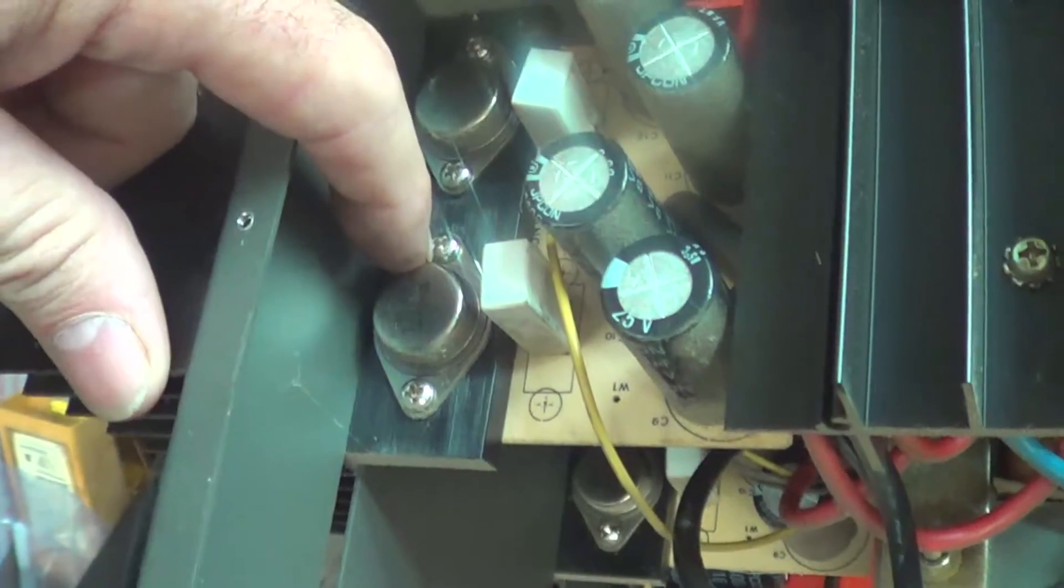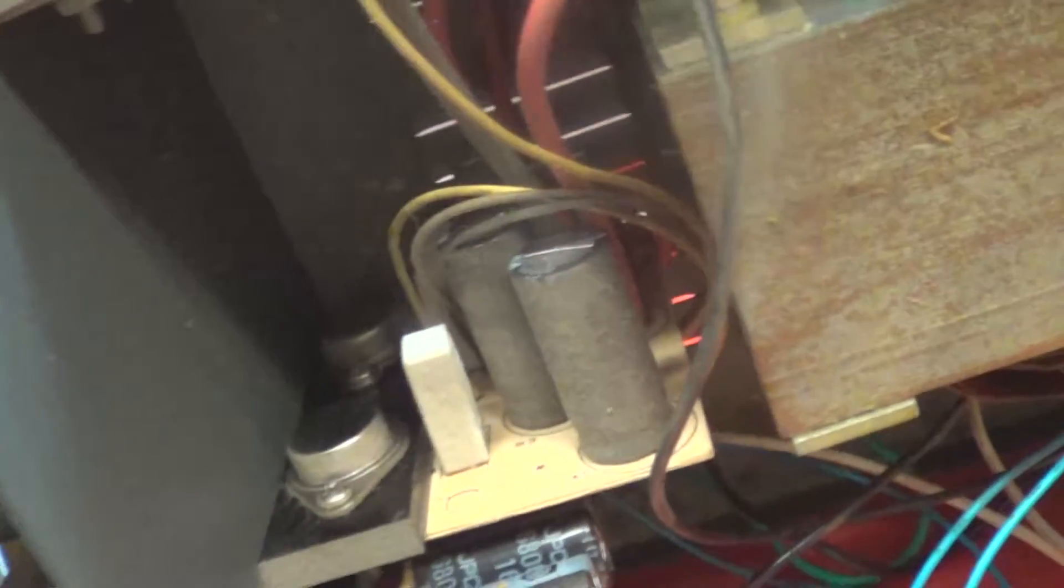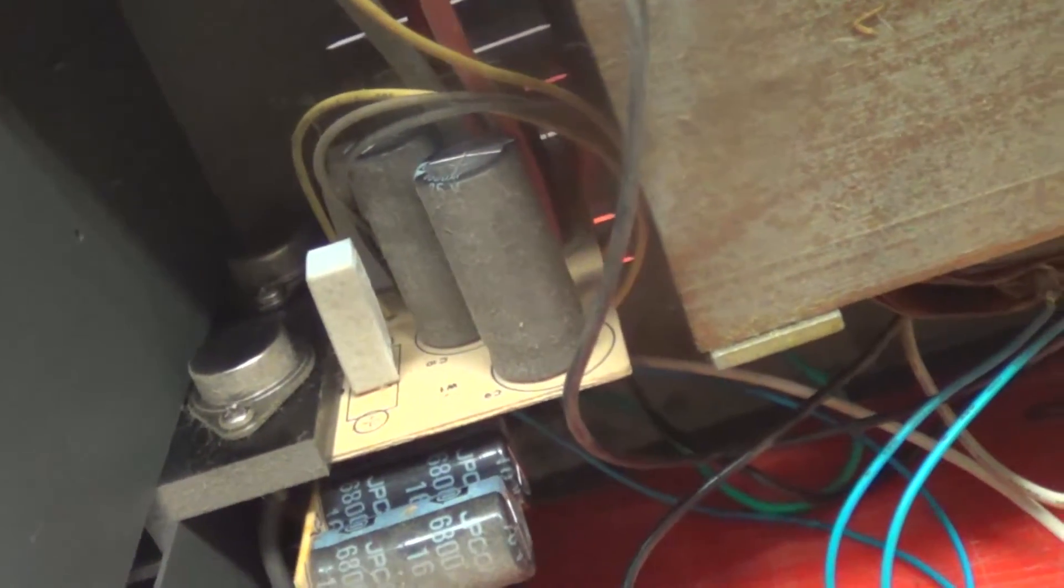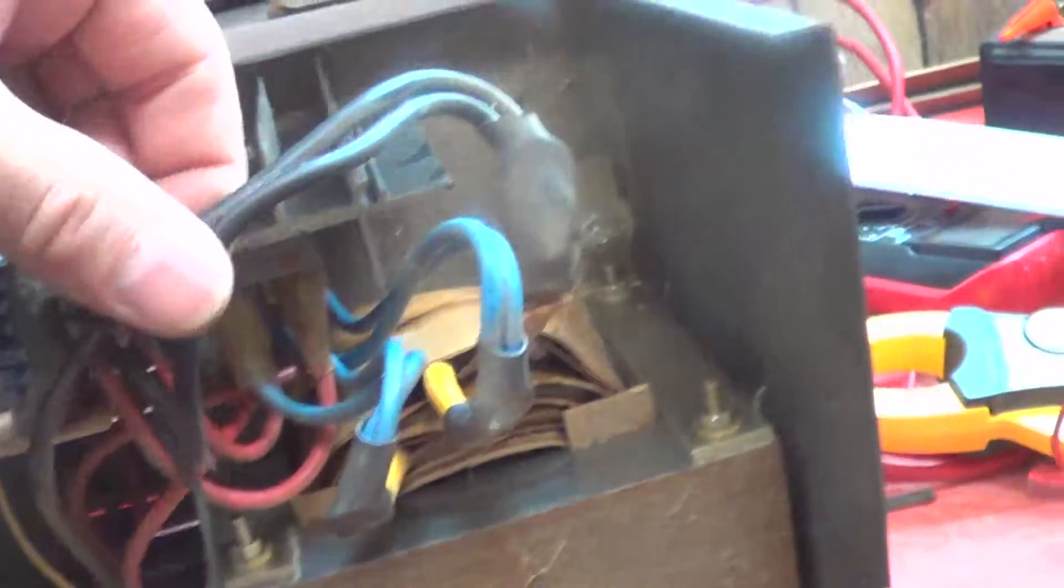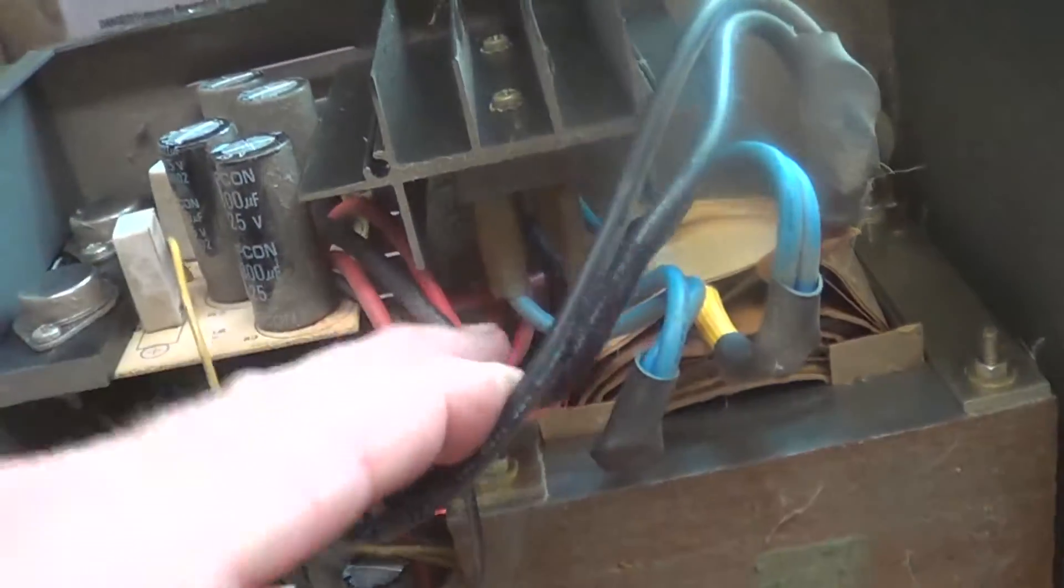These are 2N3771s. You've got 1, 2, in that bank, and there's another set in there. These boards look similar. And then the output here in the center tap, one goes to this board, and one goes to the one over here.